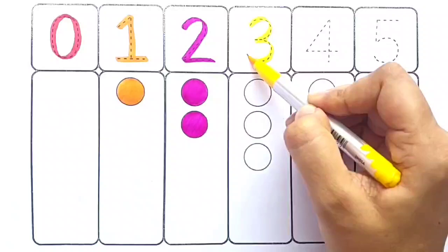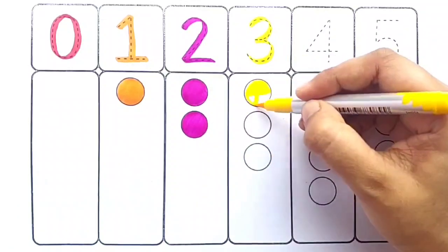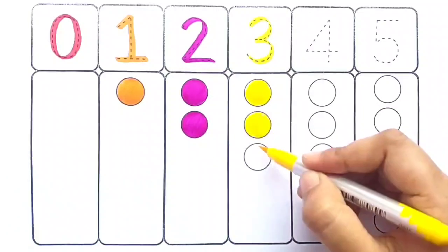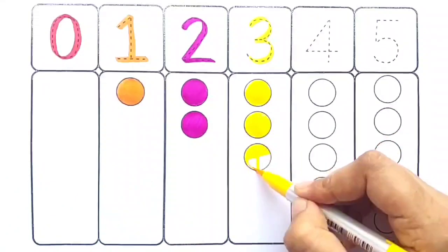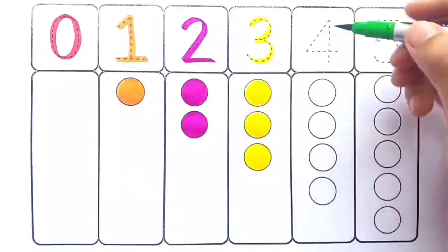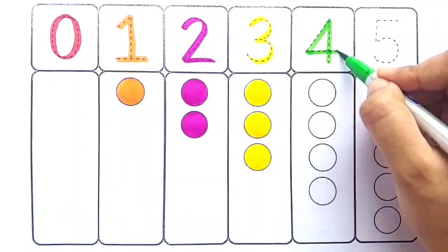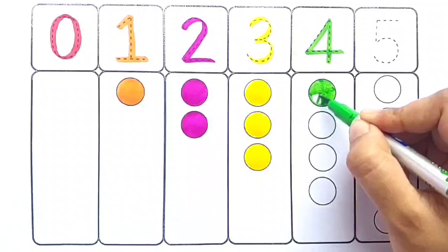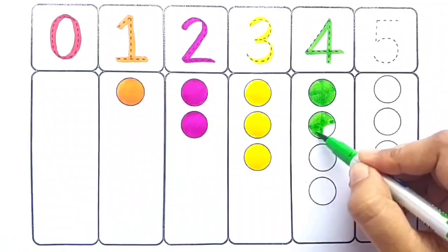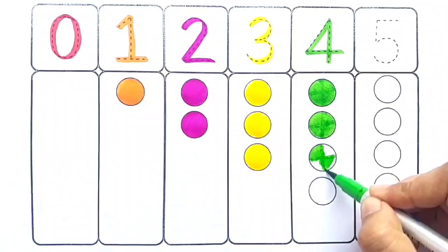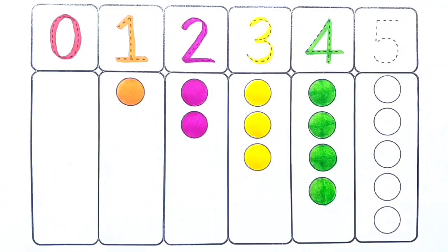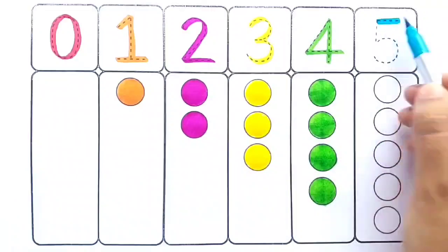One two three, three balls. Light green color four, one two three four, four balls. Sky blue color five.